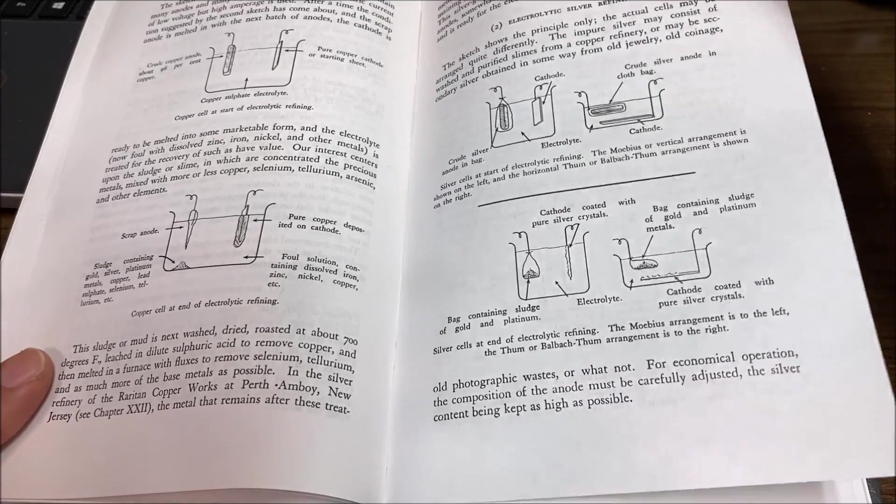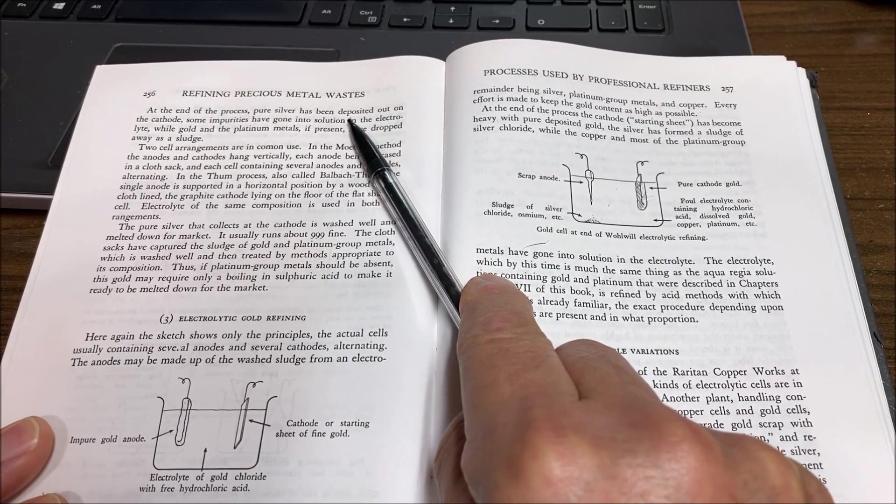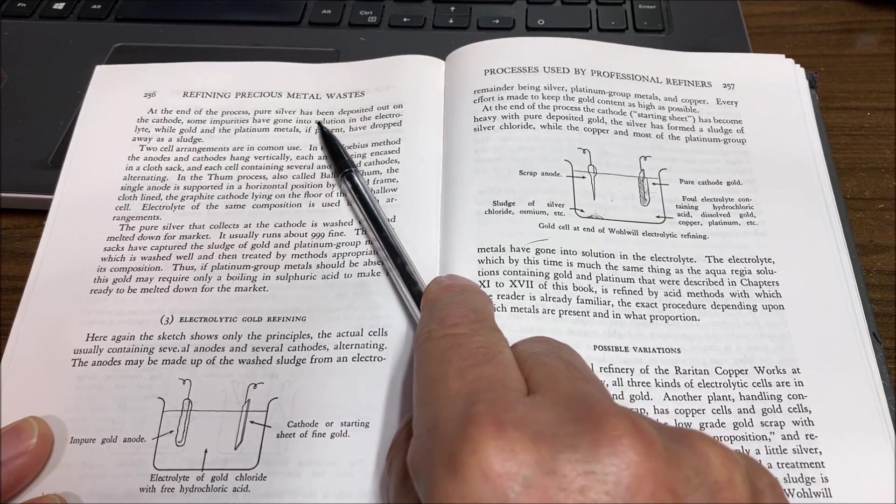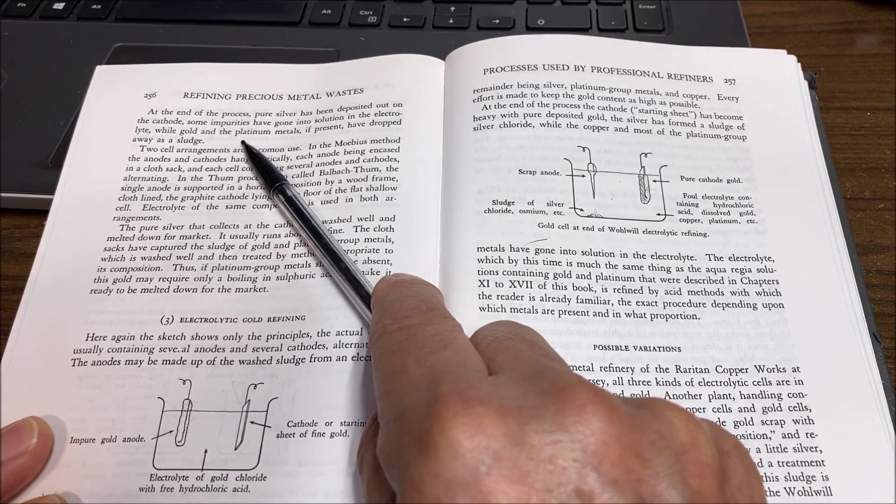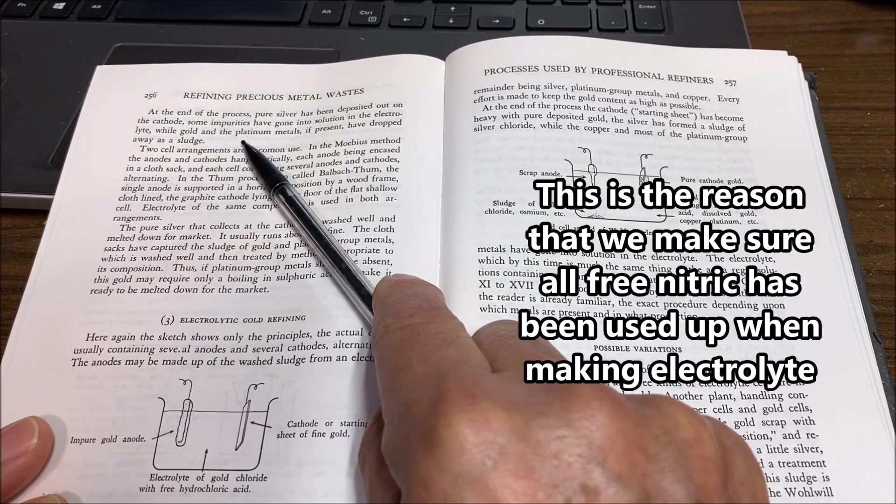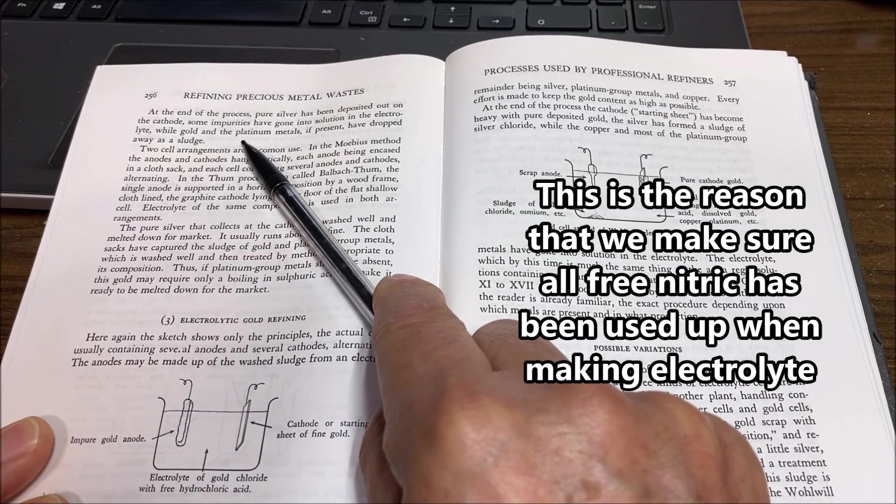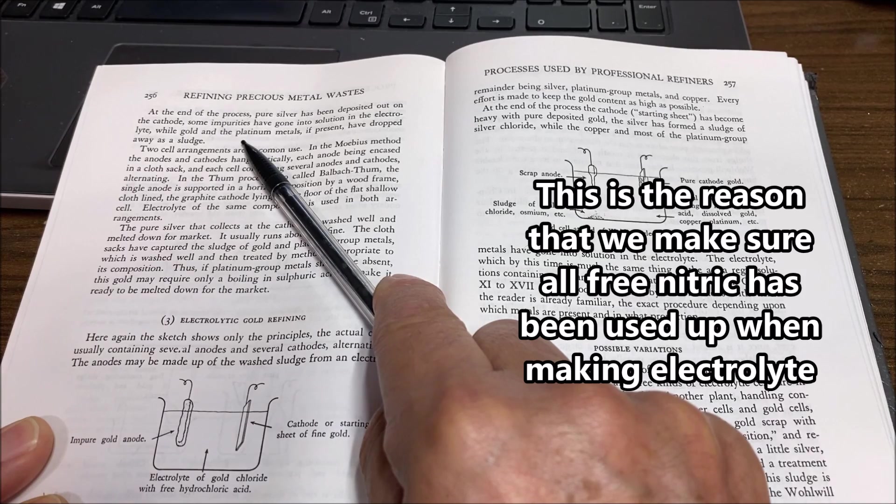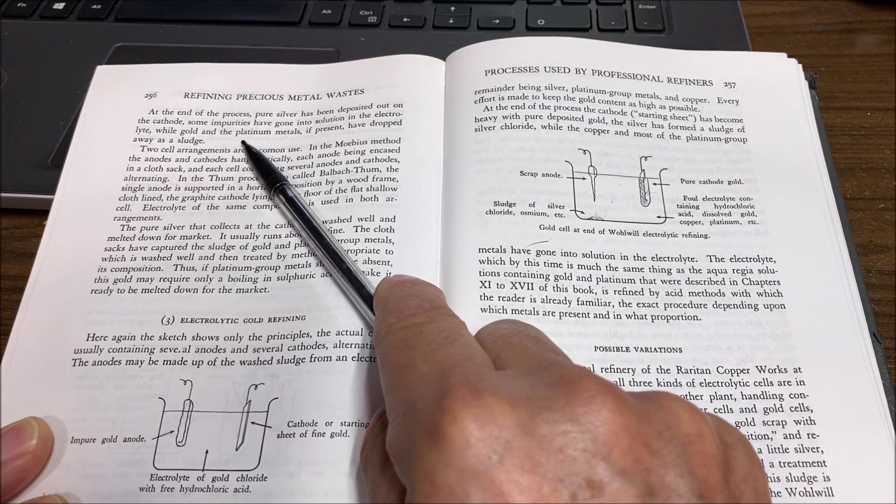On the next page, page 256, up here it says the silver deposits out on the cathode. Some impurities have gone into solution in the electrolyte, mostly copper. But palladium will too if you've got the nitric content in the electrolyte high. Any palladium that's in the impure silver will tend to dissolve and go into the electrolyte. You can tell when that happens when the electrolyte turns green. It'll normally be blue from the copper - palladium in solution is yellow, blue and yellow make green. So if your electrolyte is turning green, there's a high probability that you're gonna have palladium in your electrolyte.